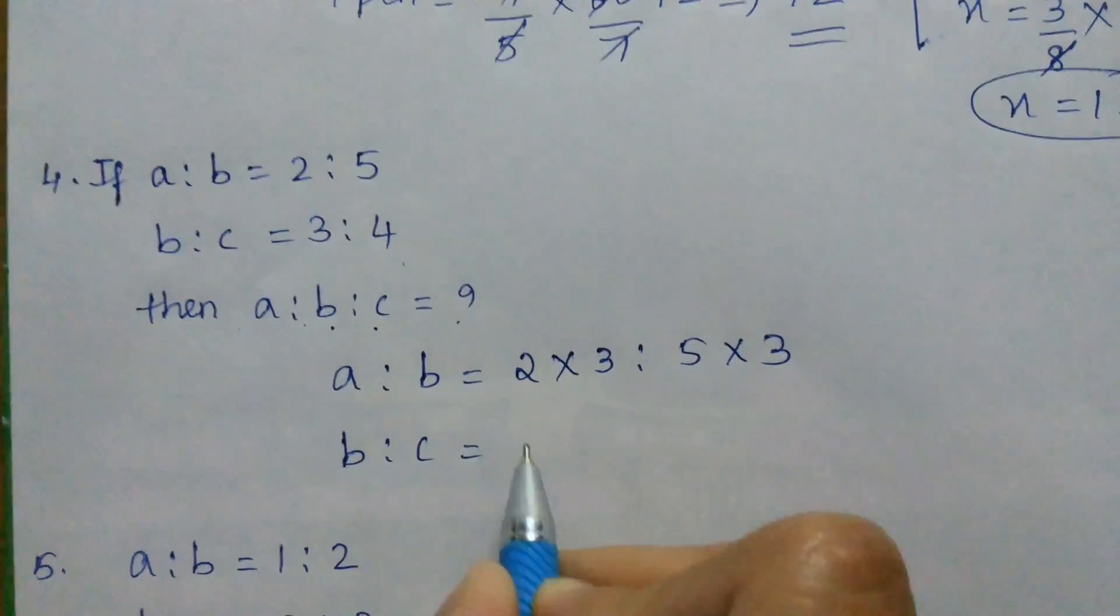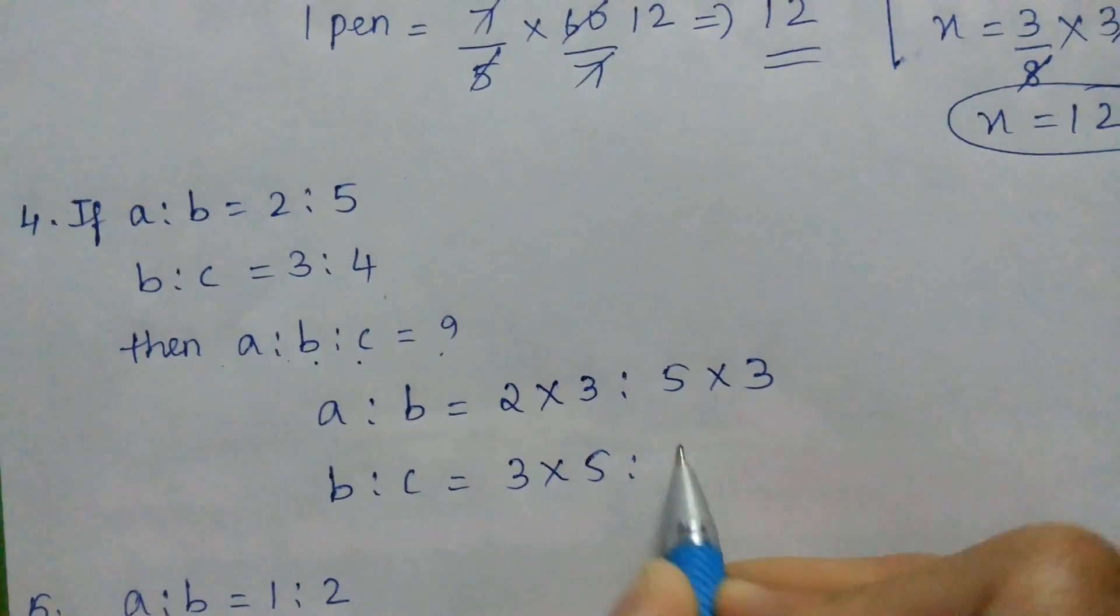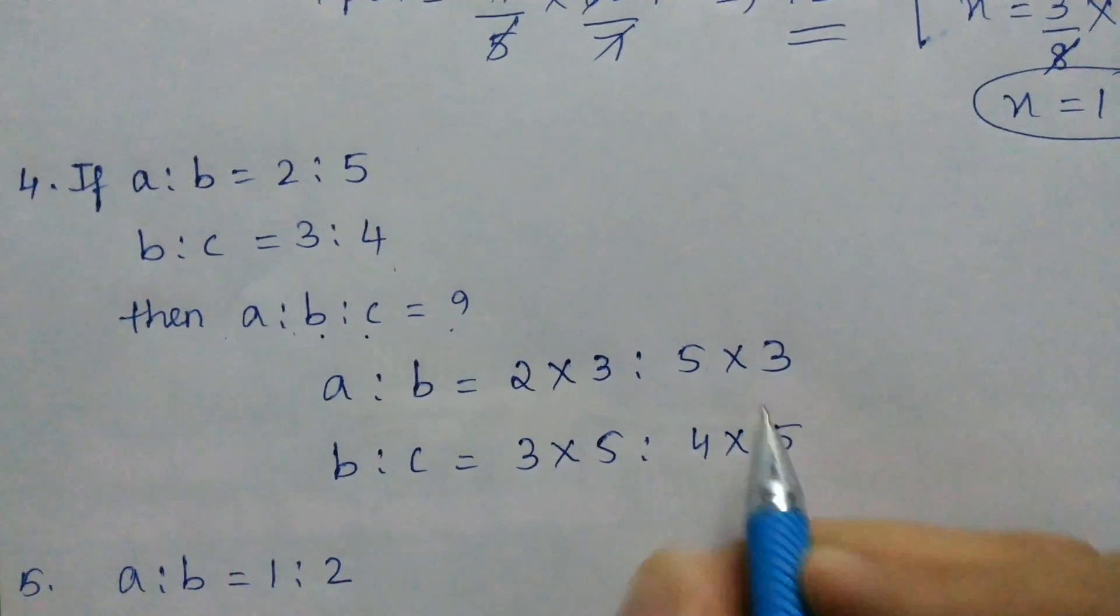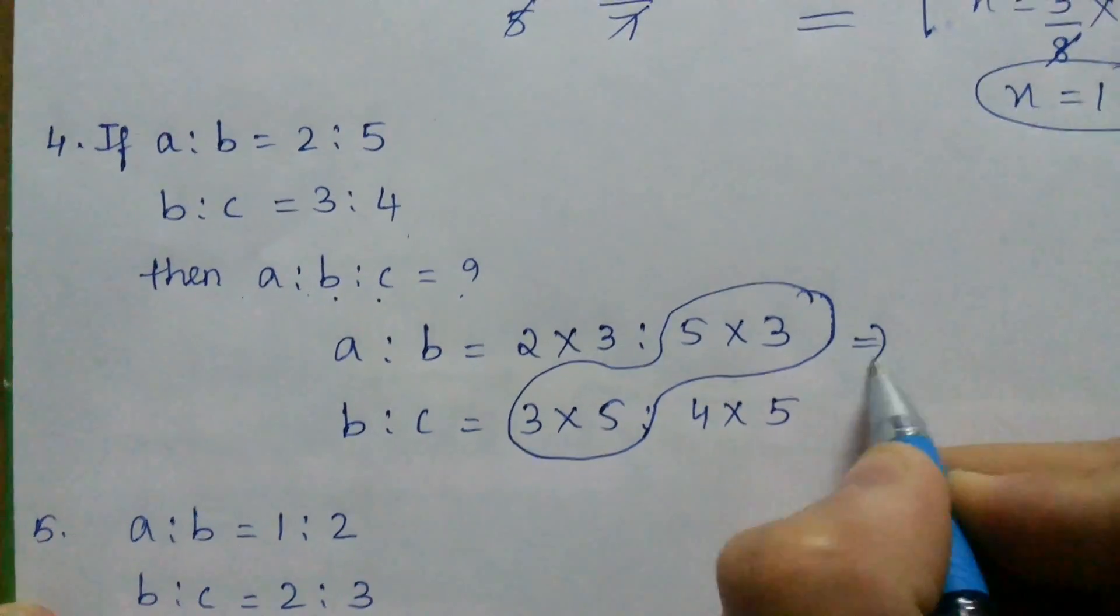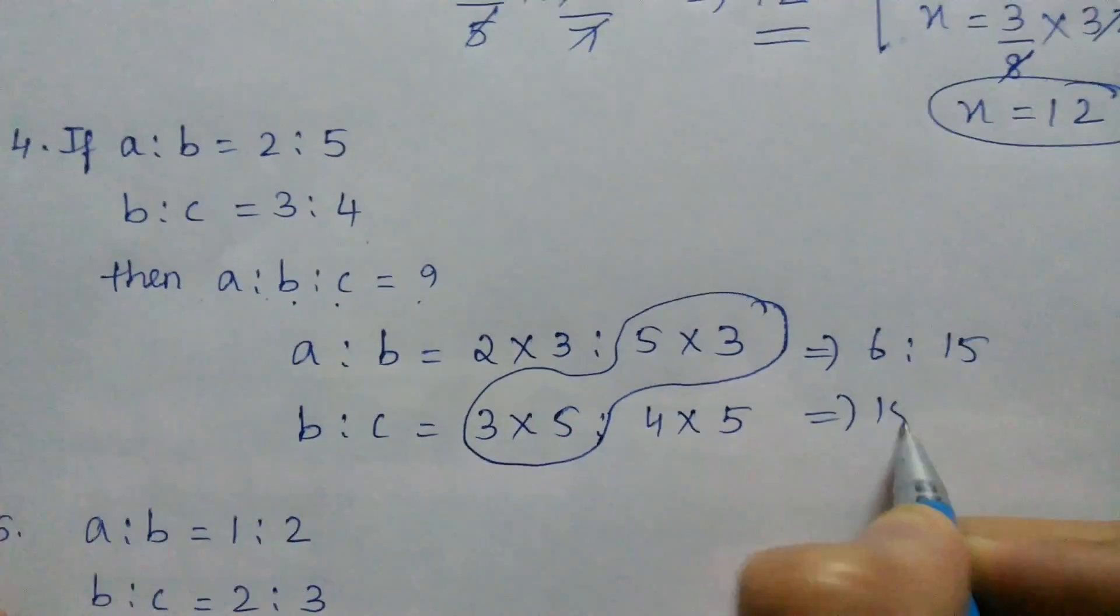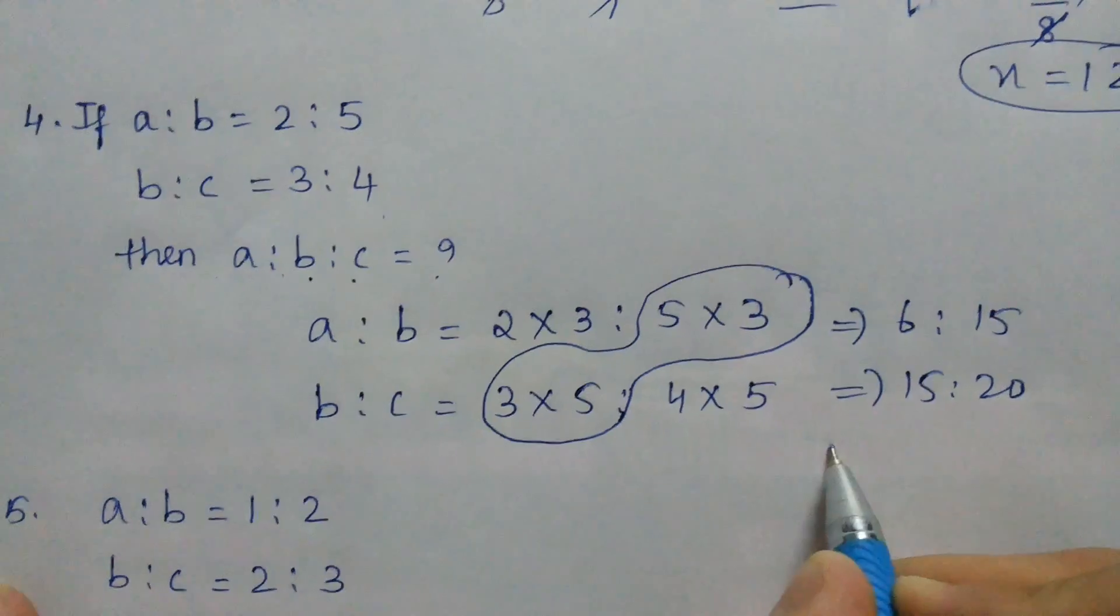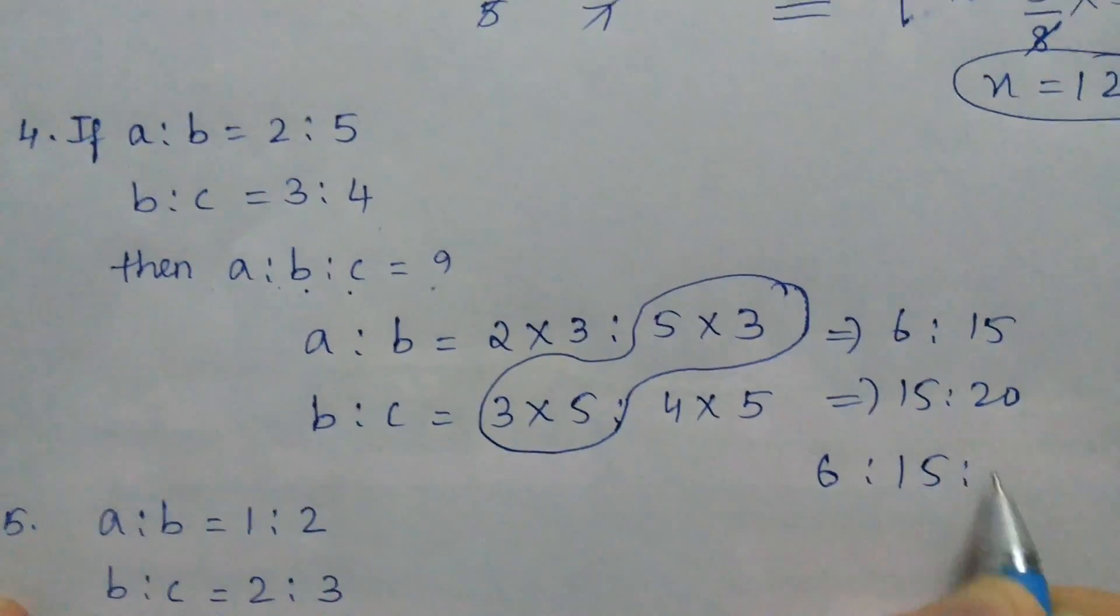B is to C is equal to 3 into 5 is to 4 into 5. Because we want to equate this. That is 6 is to 15 and 15 is to 20. So the ratio comes as 6 is to 15 is to 20.